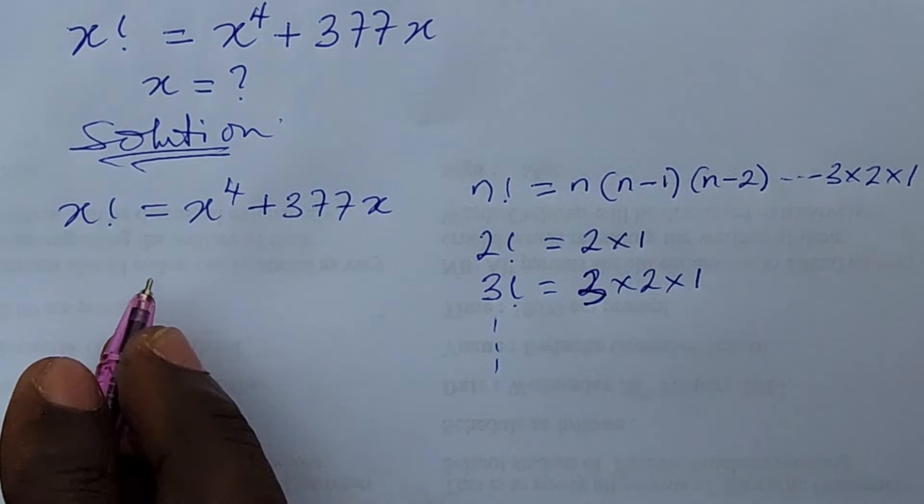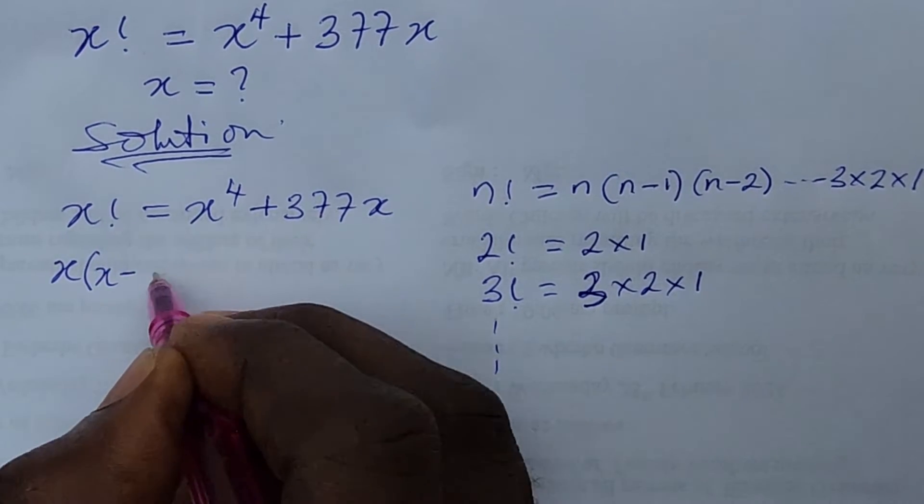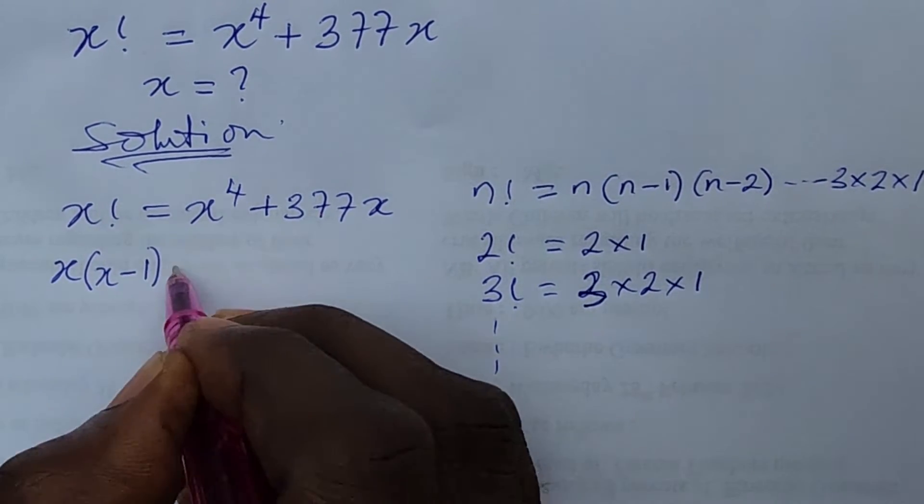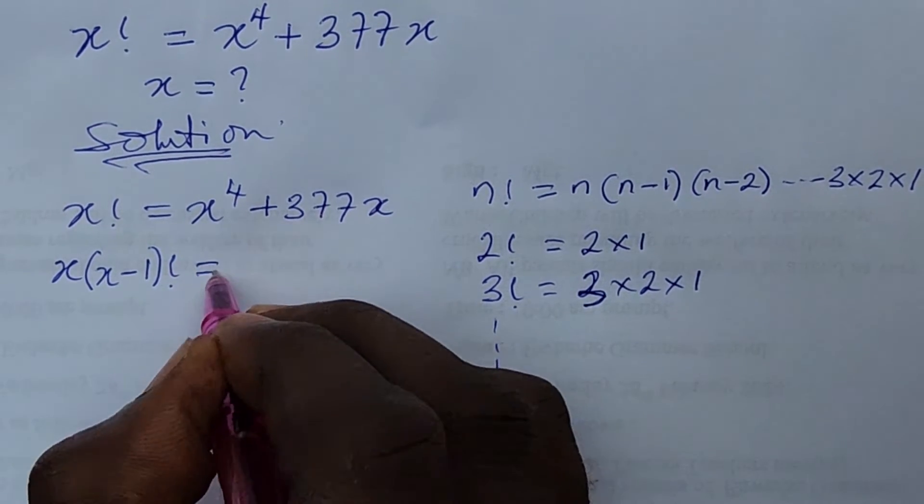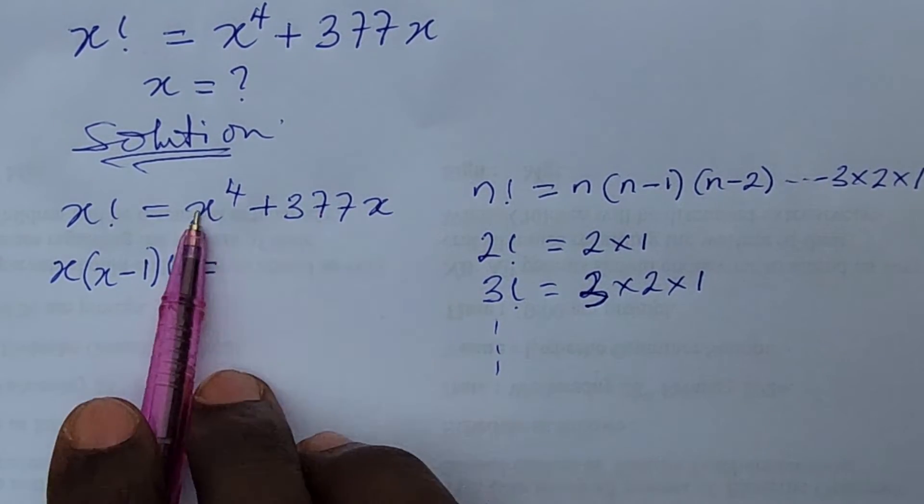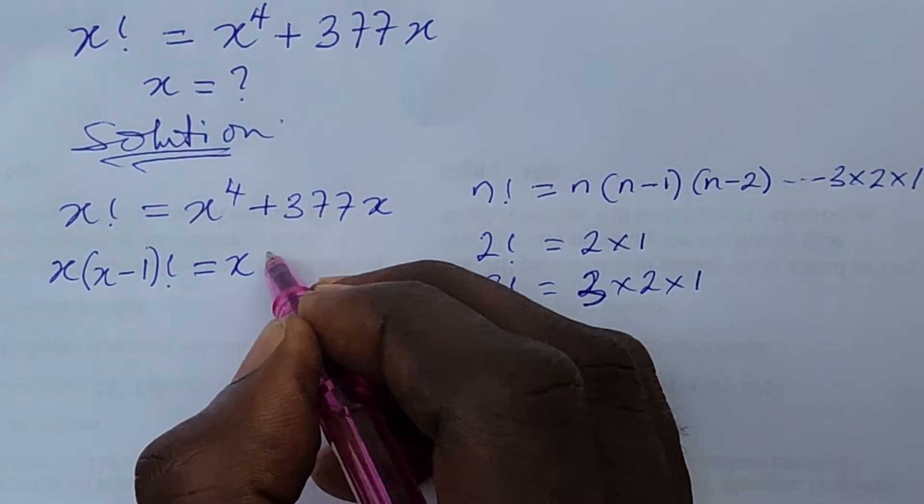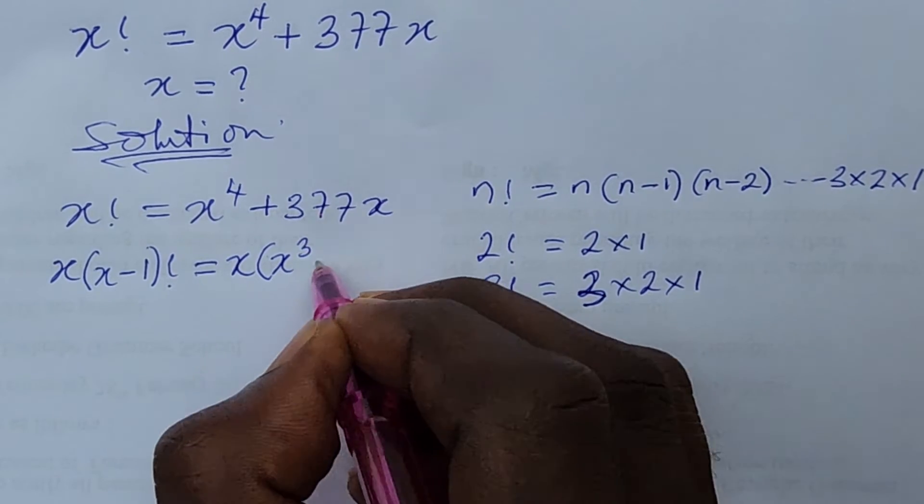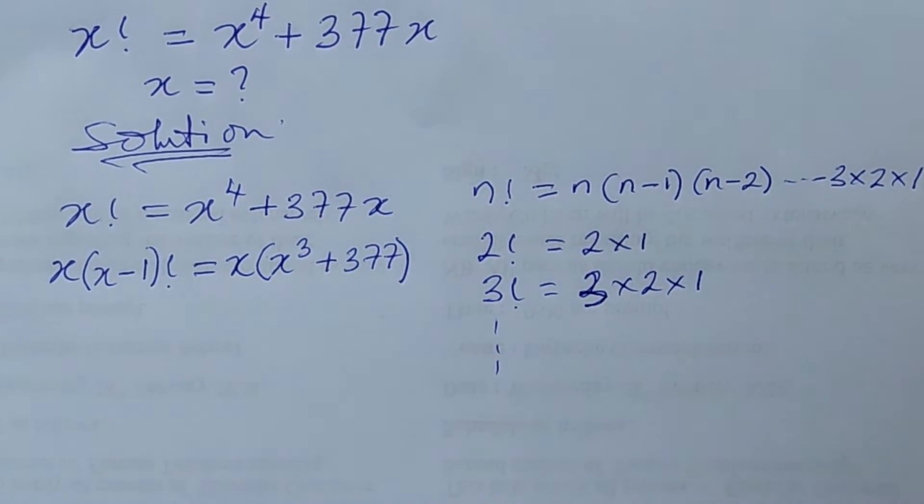So here it's going to give us something of your x bracket your x minus 1 plus bracket factorial. This is equal to, all we need to do is to factor out x from this expression here. Because x is common so we have here this will give us x to the power of 3 plus 377 with our bracket.